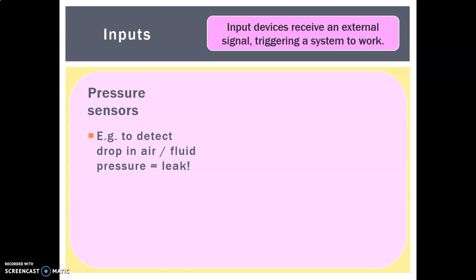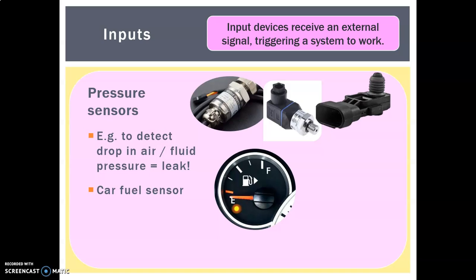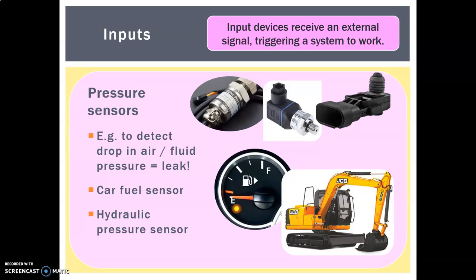The last input is a pressure sensor, which detects air or fluid pressure. A drop in pressure might indicate you're below the recommended fluid level or there's a leak. One example is a car fuel sensor — the warning light doesn't come on until the pressure sensor in the tank detects the pressure has dropped too low, telling you to refuel. Another example is a hydraulic pressure sensor on a JCB digger — the hydraulic oil-based system moves the arm, and an indicator light warns the operator if pressure drops too low.